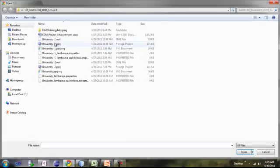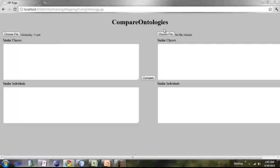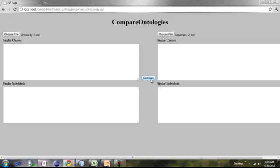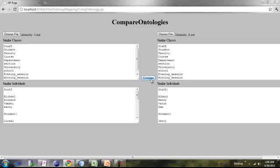What you see here is four text boxes in which the top two are the similar classes, the bottom ones are the similar individuals. Now let's import the ontologies, university one and university two and try comparing them. What we see here is two different ontologies creating similar patterns like similar classes in the top and similar individuals at the bottom.